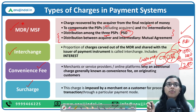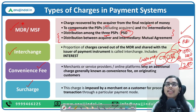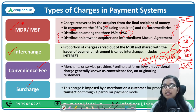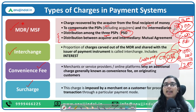Finally, the surcharge is levied by the merchant on customers when the merchant feels the MDR charged to them is unreasonably high. To compensate, they add a surcharge — for example on a 10,000 purchase, a 1-2.5% surcharge means the customer pays extra. This surcharge is charged by the merchant on customers for processing a transaction.